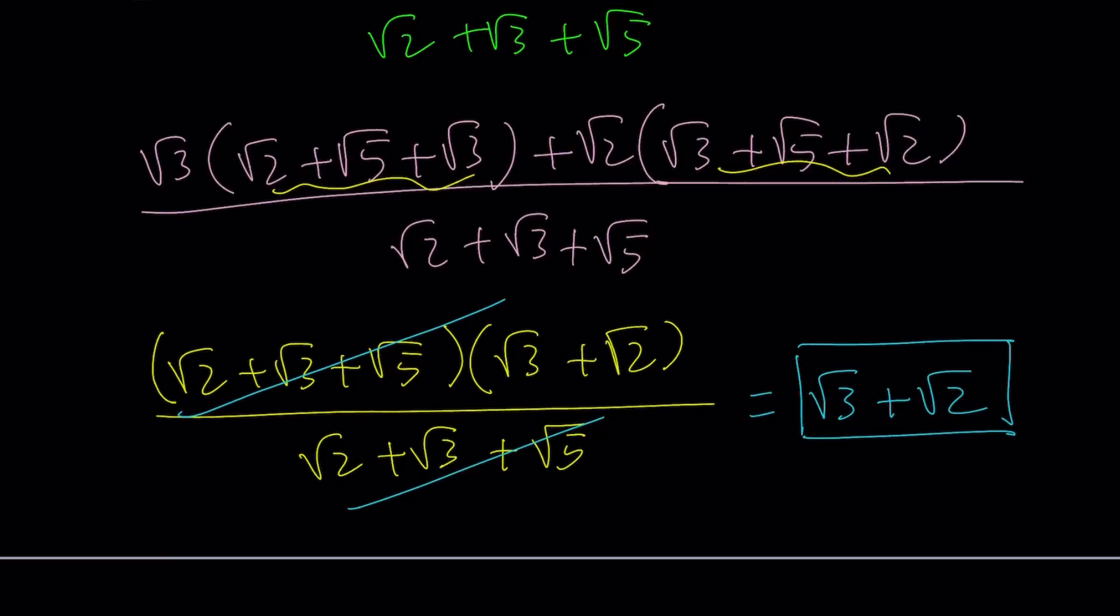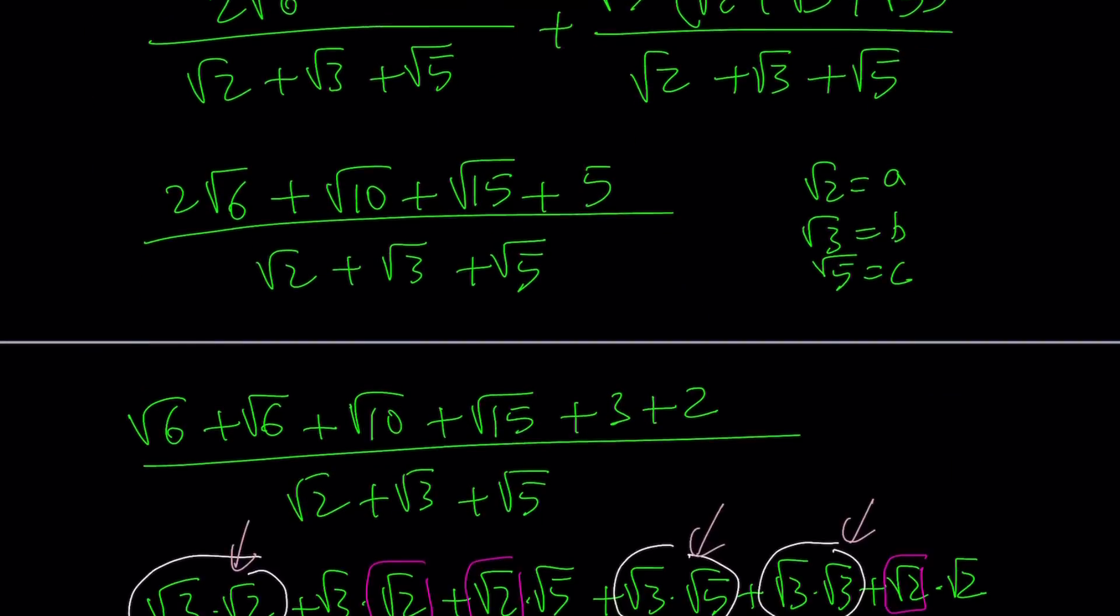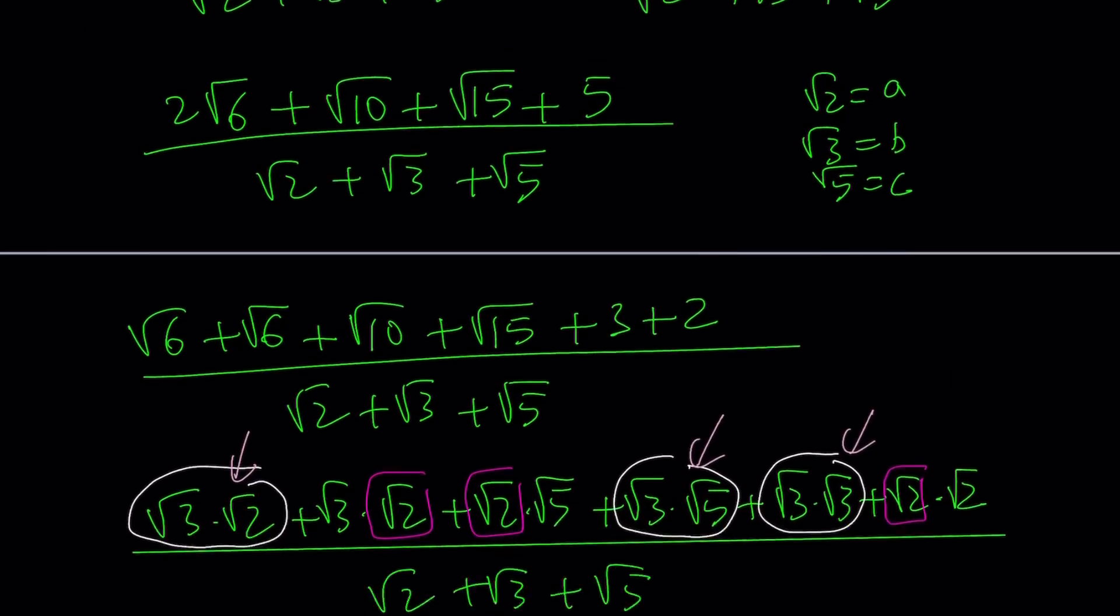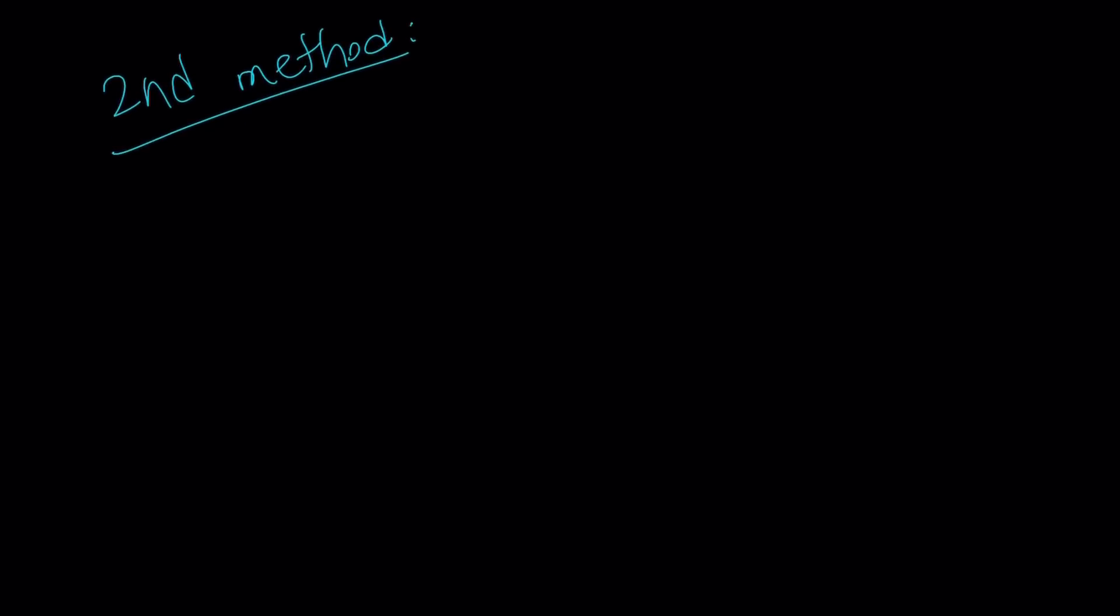Let's go ahead and take a look at the second method. So my first method involved making a common denominator and then breaking down the numerator so that it's factorable by grouping, which is not very straightforward. And obviously, after I do the second method, you're going to realize if you know the second method, you can come up with the first method. So that's what's really cool about that.